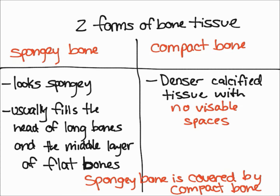So that pretty much sums it up for bone. What you should remember from this video is that bone has two meanings: it can either be referred to as an organ or as bone tissue. There are two forms of bone tissue — spongy bone and compact bone. Spongy bone is always in the middle, covered by compact bone. So when you look at the bones you're normally accustomed to seeing, the outside you can see is actually the compact bone.